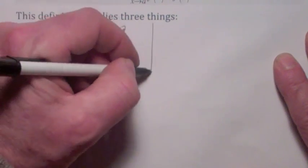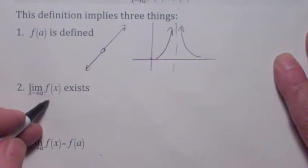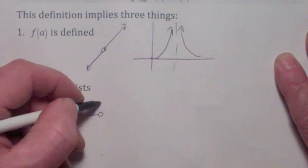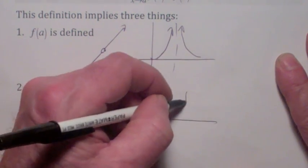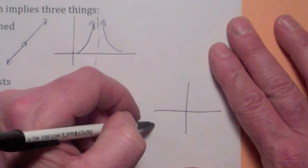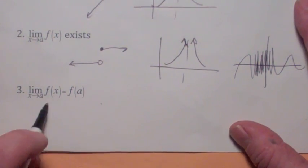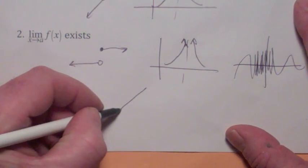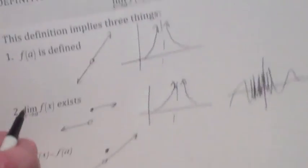For example, if f of a is undefined, you could have a situation like that, or you could have a vertical asymptote. If the limit of f of a doesn't exist, you could have a jump, or a vertical asymptote, or even oscillation as x gets close to zero like sine of one over x. The third case is you could have the limit not equal the function value — for example, a hole but defined to be something else. These are all examples of ways a function can fail to be continuous.